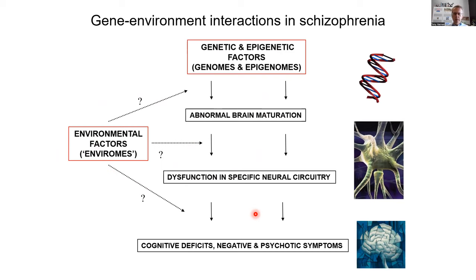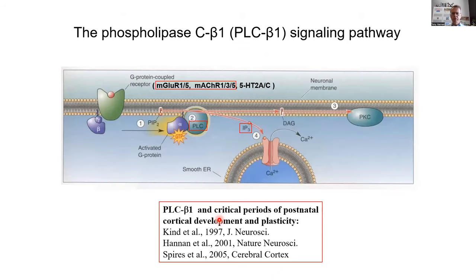In individuals with schizophrenia, they develop cognitive deficits as well as negative and psychotic symptoms due to altered brain circuitry. One of the models we've used for schizophrenia involves a homozygous mutation in the PLC beta 1 gene. The way we got interested in PLC beta 1 was through its role that we demonstrated during critical periods of postnatal cortical development and plasticity.